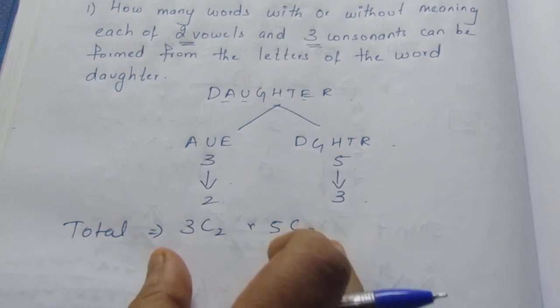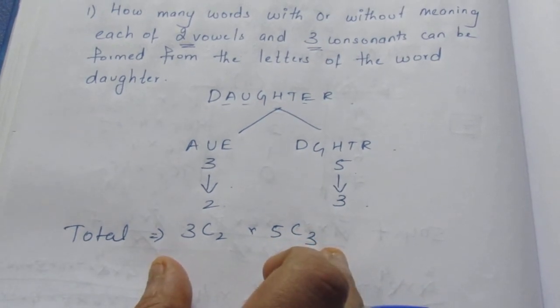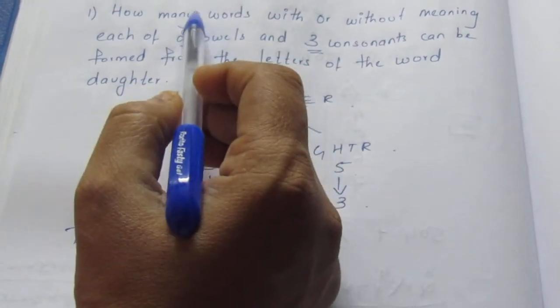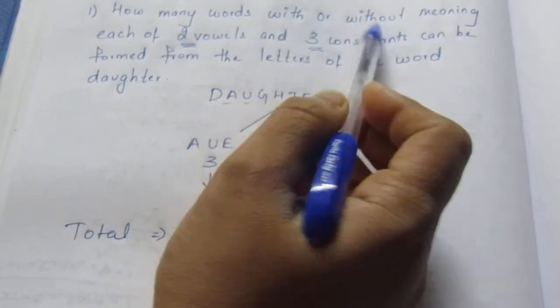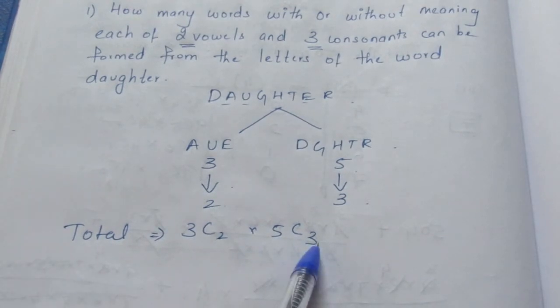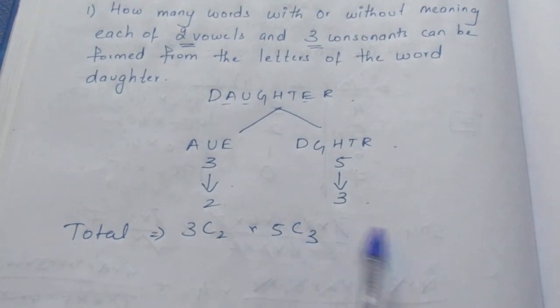They will stop here but read the question carefully. We want to find words with or without meaning. For finding words, selecting these five letters, that is two from here and three from here, we need to arrange them.